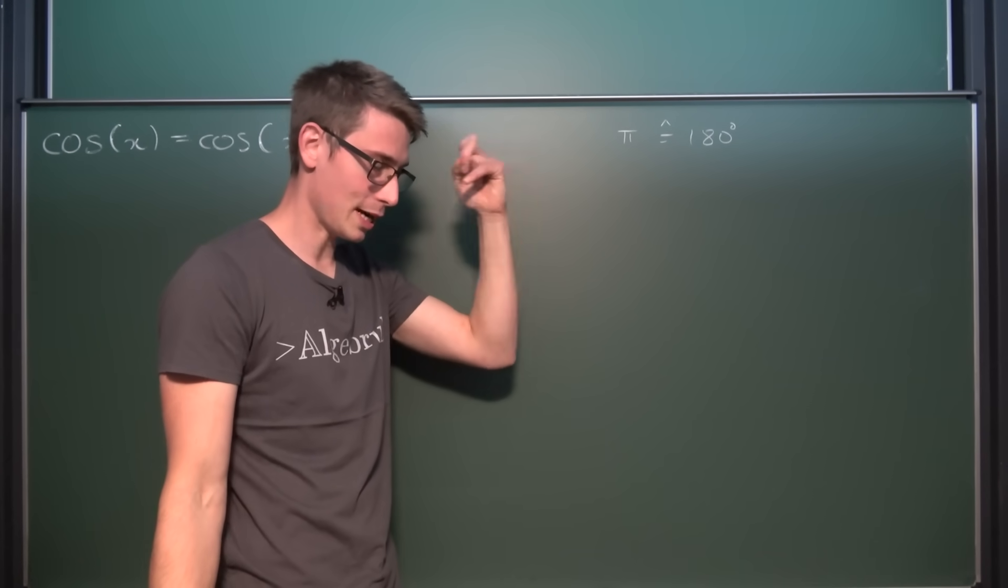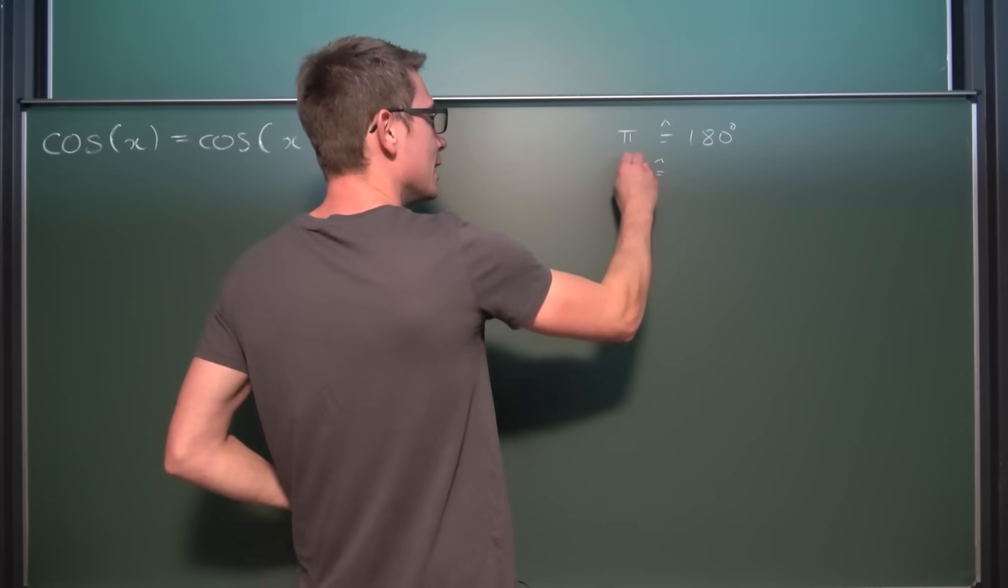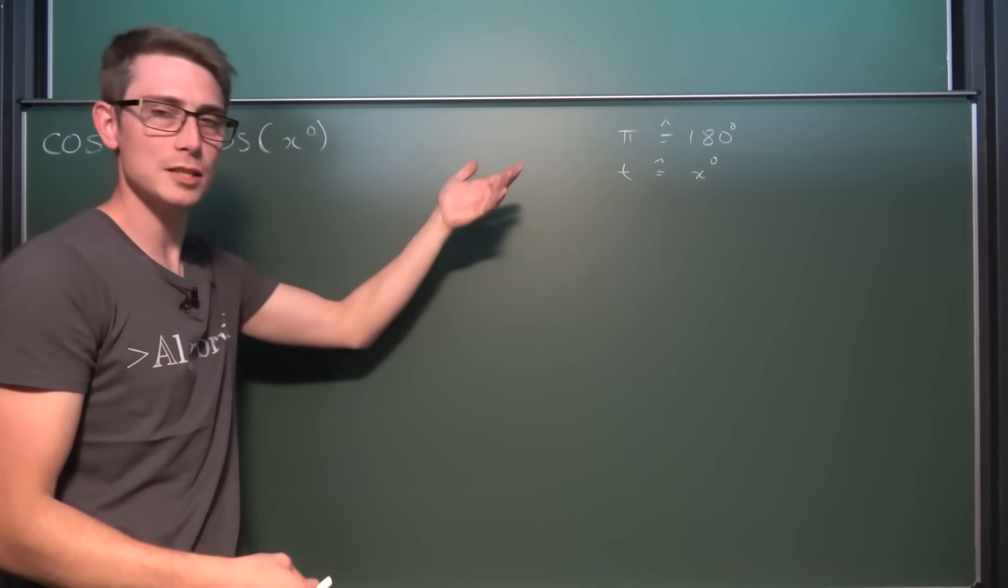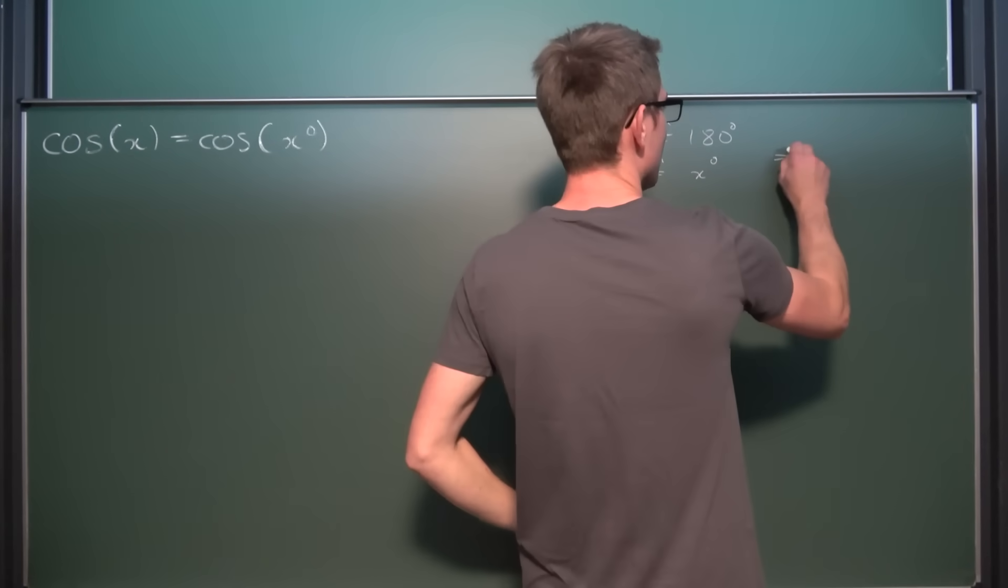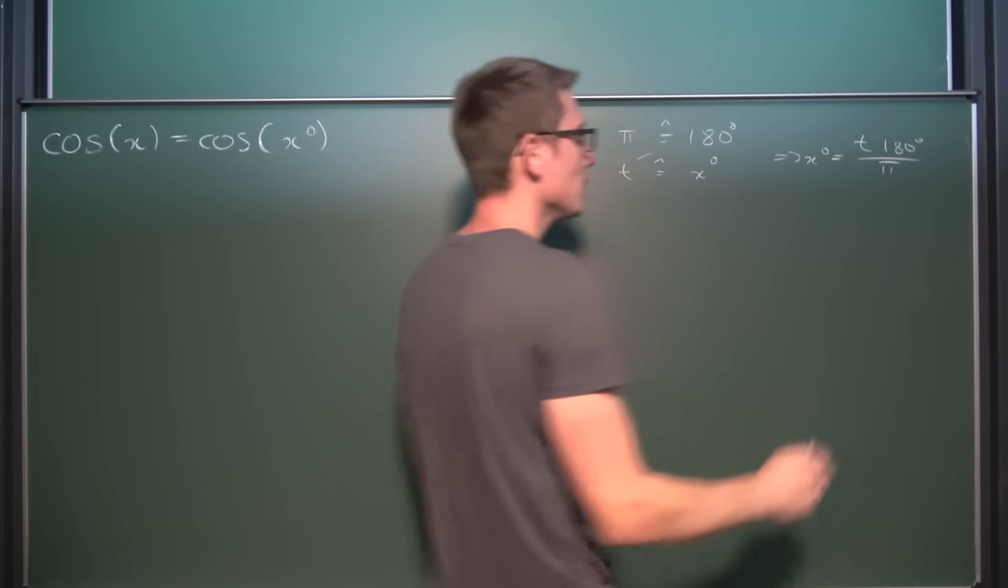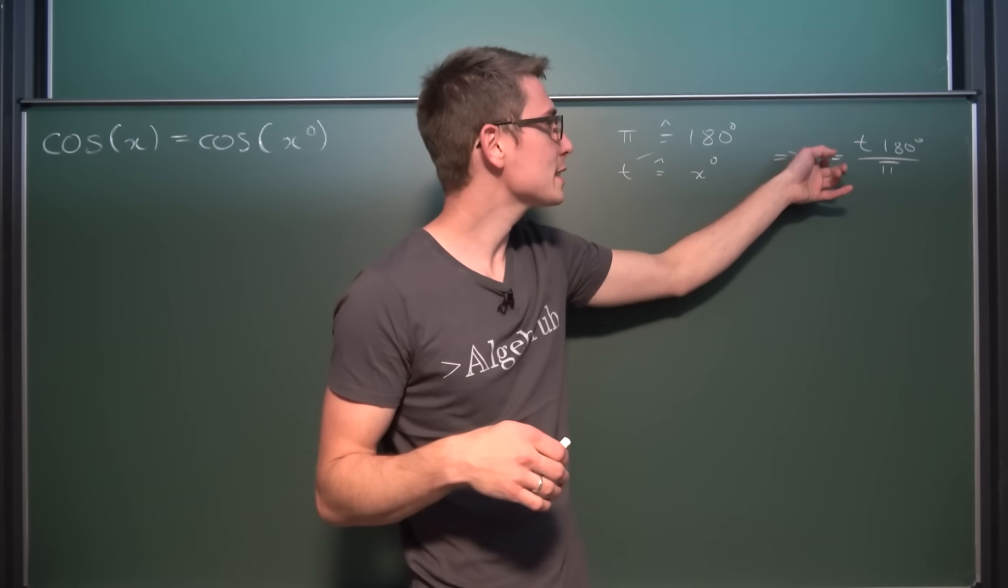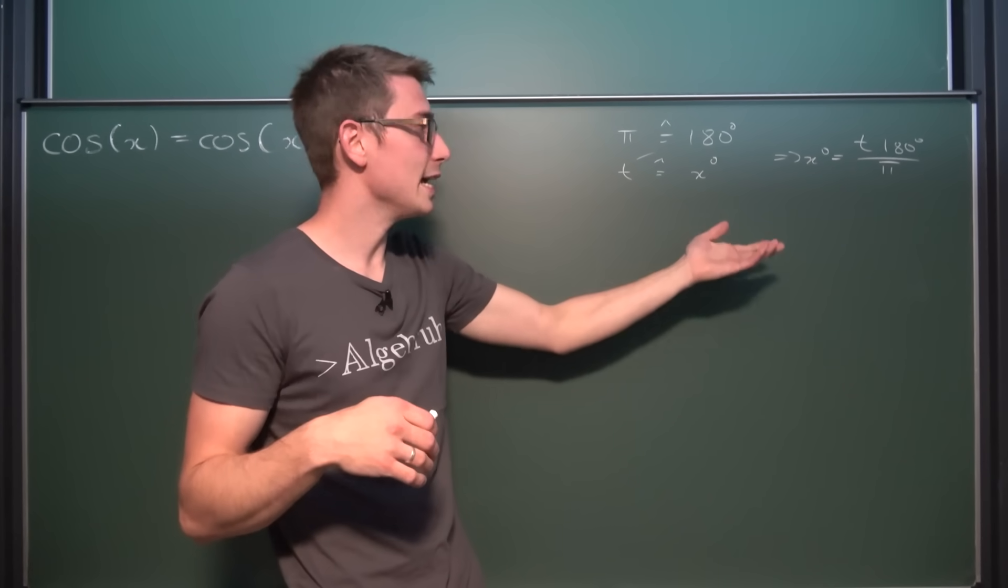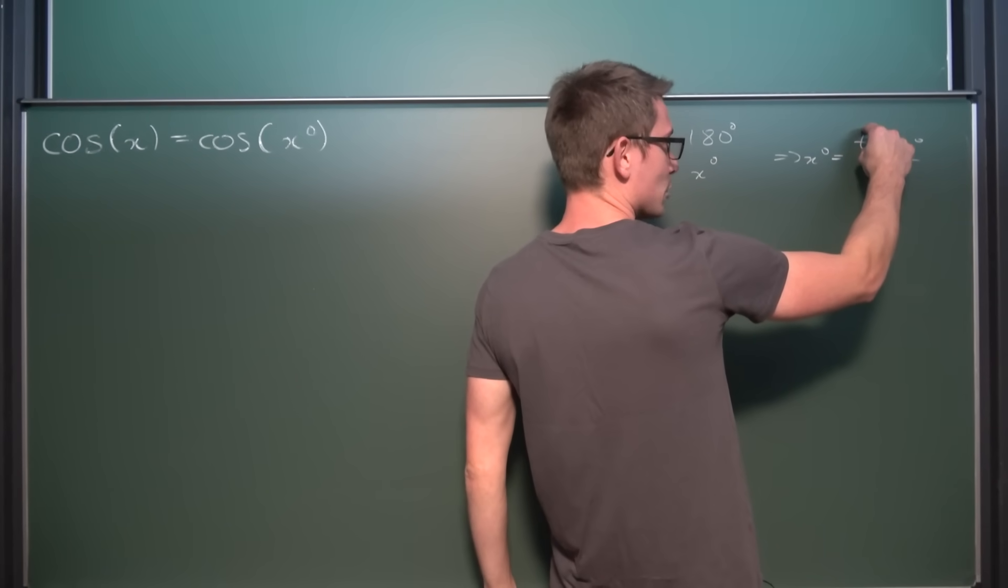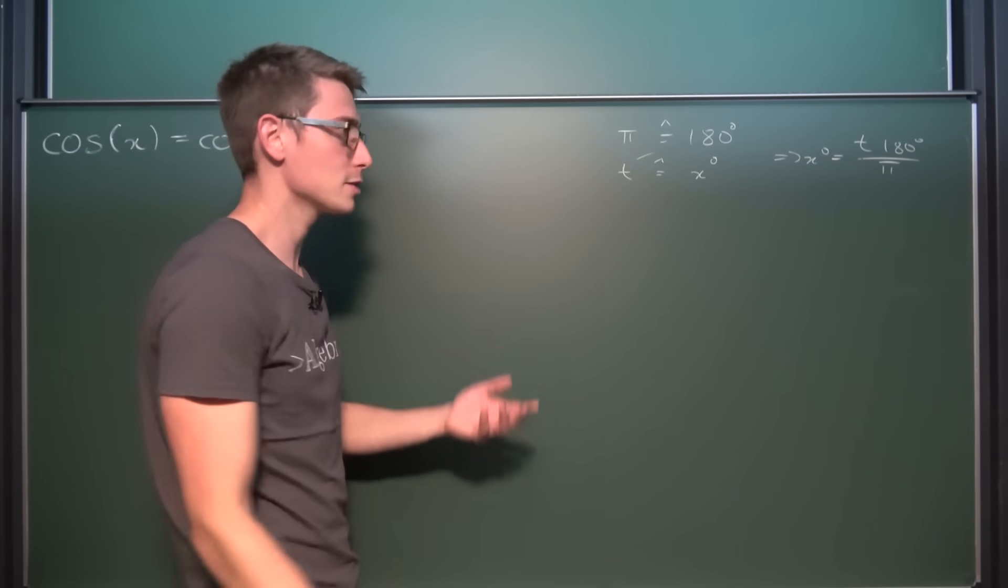But we also need to understand what is x degrees, for example, in radians. So what we are going to do is just say how many radians are equal to how many degrees. And then we can make use of cross multiplication here. x degrees is equal to t times 180 degrees divided by π. So basically what you get from this equation is if you want to convert degrees to radians or radians to degrees, you just multiply your factor by 180 divided by π.